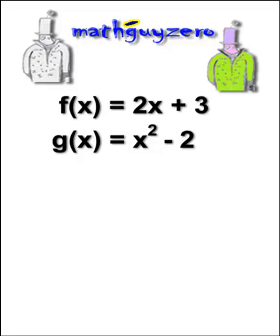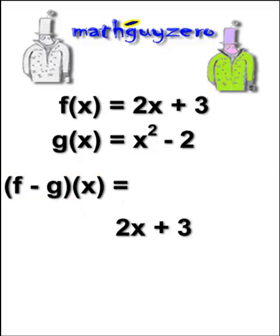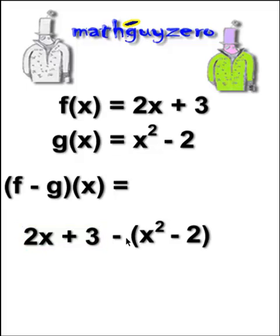And here's subtraction function arithmetic real quick. The only thing you have to remember is when you're subtracting the second function, put it in parentheses so you don't mess up. We know what f(x) is, we know what g(x) is, and we need to subtract them. Put the whole second function in parentheses.